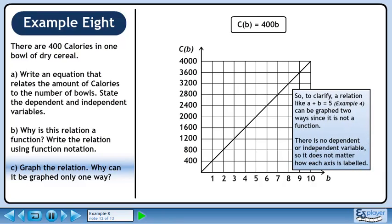So to clarify, a relation like A plus B equals 5 can be graphed two ways since it is not a function. There is no dependent or independent variable, so it does not matter how each axis is labeled.